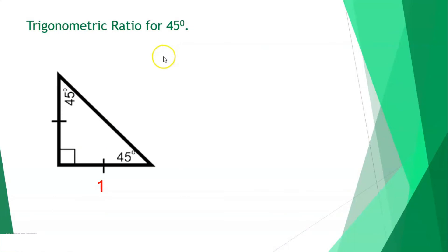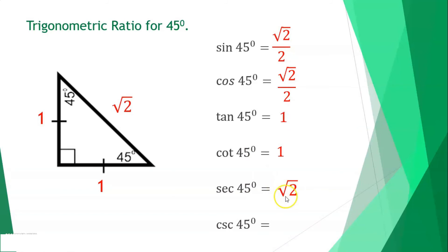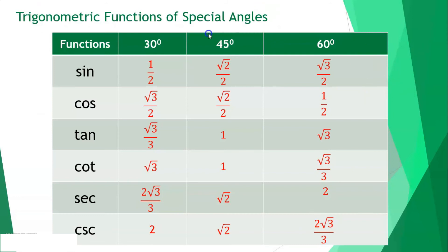For a 45-45-90 triangle with each leg equal to 1 and hypotenuse = √2: sine 45° = 1/√2 = √2/2. Cosine 45° = √2/2. Tangent 45° = 1/1 = 1. Cotangent 45° = 1. Secant 45° = √2. Cosecant 45° = √2. Sine 45° and cosine 45° are cofunctions with equal values.